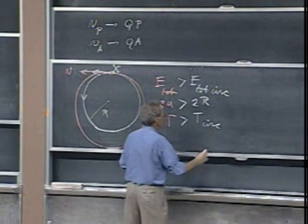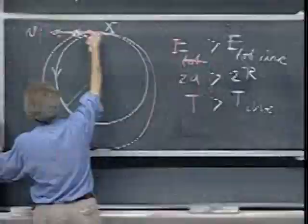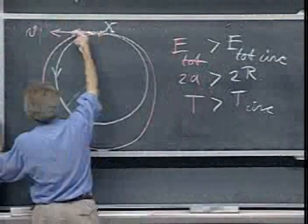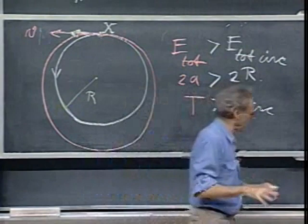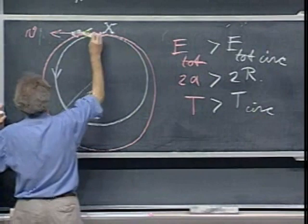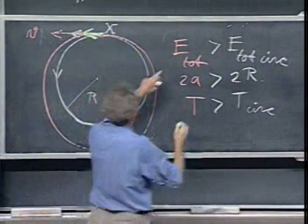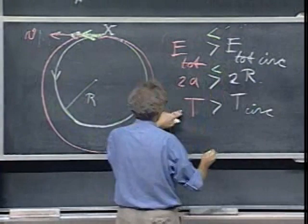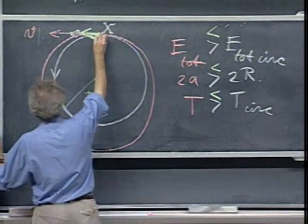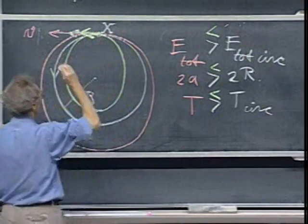My other option is to fire the rocket to spew gas forward — taking out kinetic energy — so after the burn my speed is lower. When kinetic energy decreases, the total energy is less than the circular energy, 2a will be less than 2r, and the orbital period will be less than the circular period. So the new ellipse is smaller.